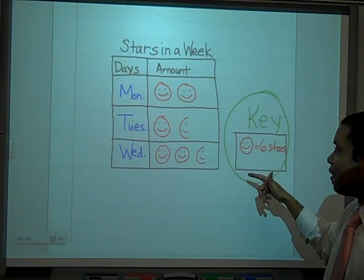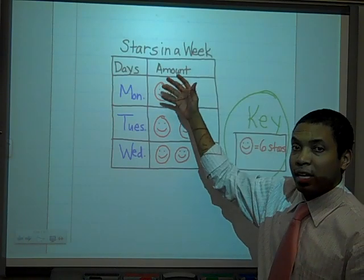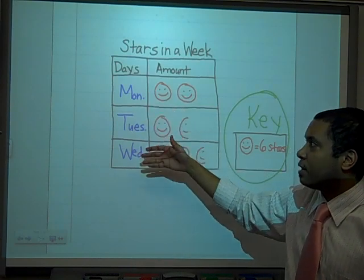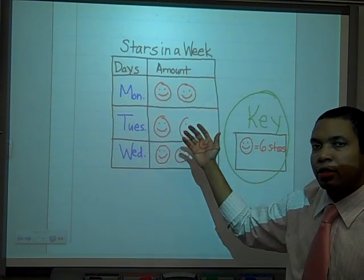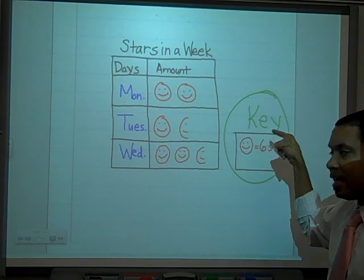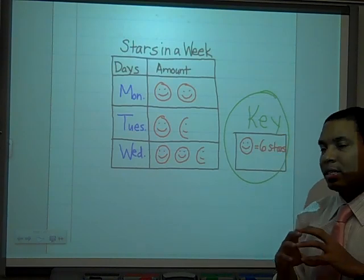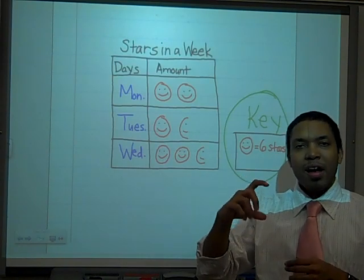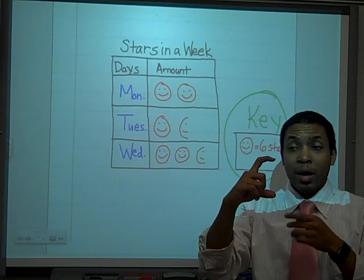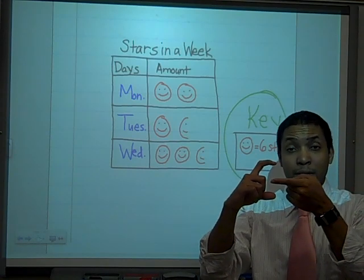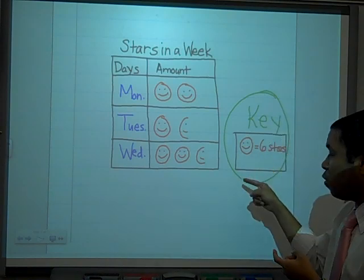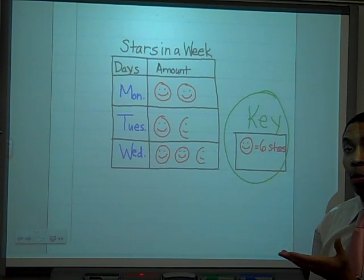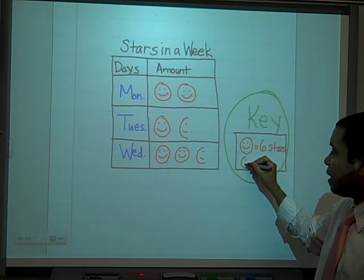I see that one smiley face equals six stars. This table right here shows stars in a week — I have different days: Monday, Tuesday, Wednesday — and pictures that are going to represent values. My key is telling me that one whole smiley face equals six stars. Just like on a bar graph or a line graph, you determine your halfway point. You're going to do the same thing here: determine what half of one of these images equals.